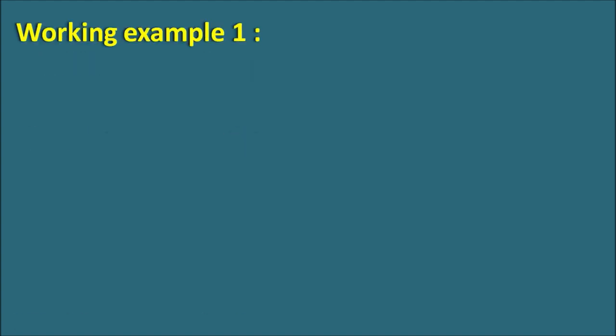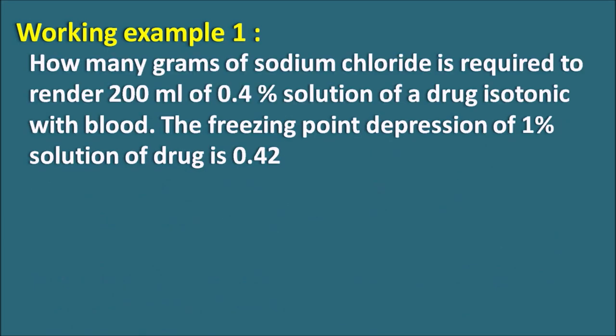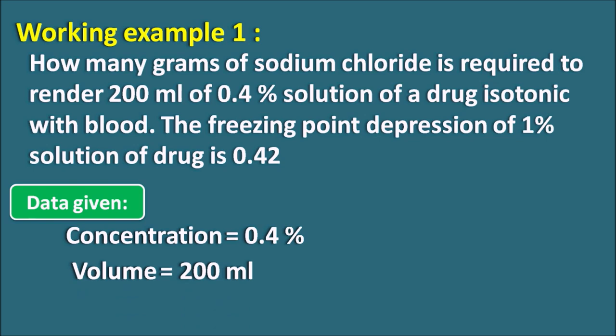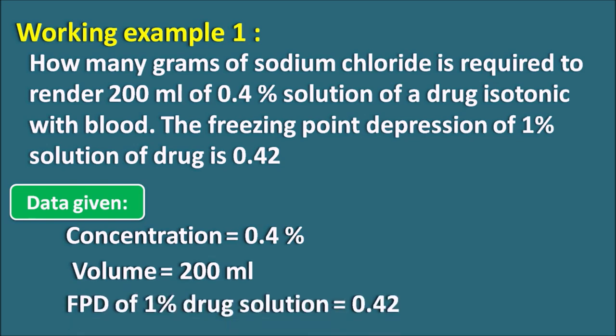Working example: How many grams of sodium chloride is required to render 200 ml of a 0.4% solution of a drug isotonic with blood? The freezing point depression of a 1% solution of the drug is 0.42. The data given: concentration of the drug solution is 0.4%, volume is 200 ml, and the freezing point depression of 1% drug solution is 0.42. The FPD is always expressed in terms of a 1% solution.